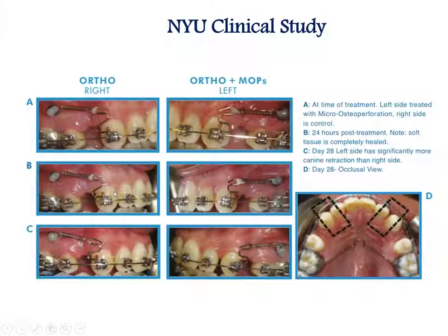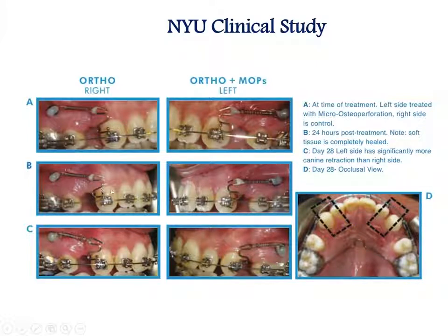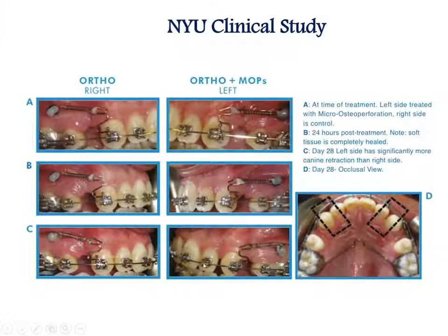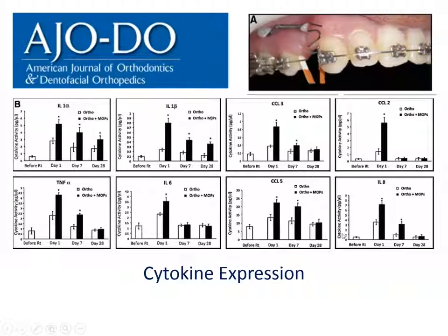The study had a split-mouth design with Class II division 1 patients requiring first bicuspid extraction, randomly assigned to control on one side and experimental on the other. Both had TADs with calibrated springs to retract cuspids; on the experimental side, osteoperforations were done. Figures show the tooth movement immediately after, at 24 hours, and at four weeks — visually demonstrating increased movement on the osteoperforation side.